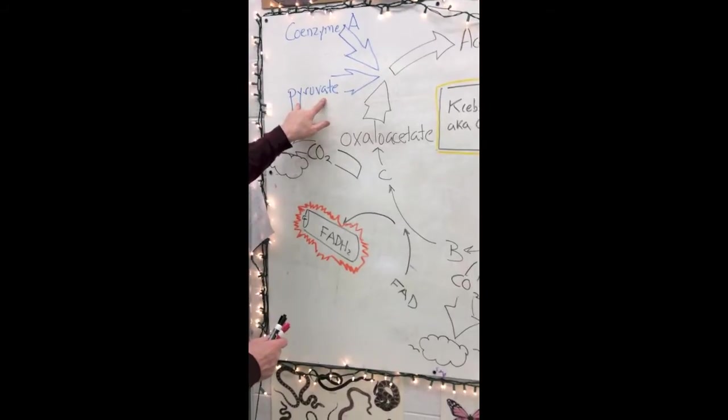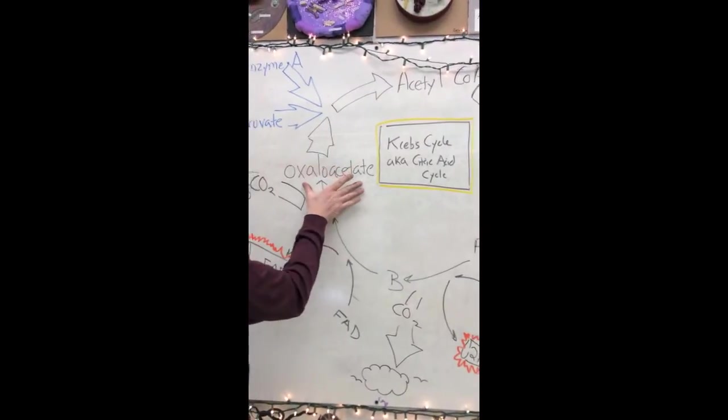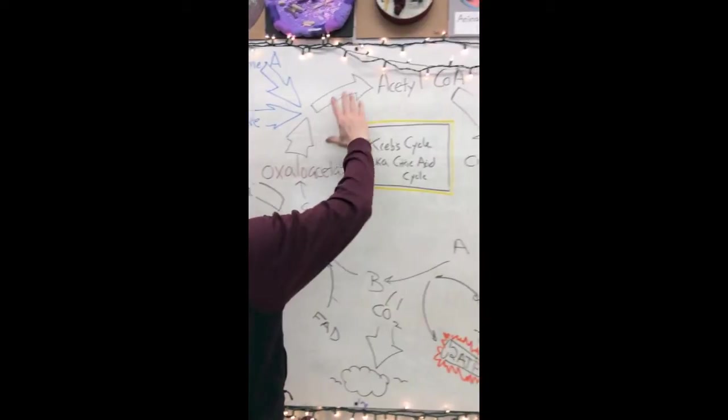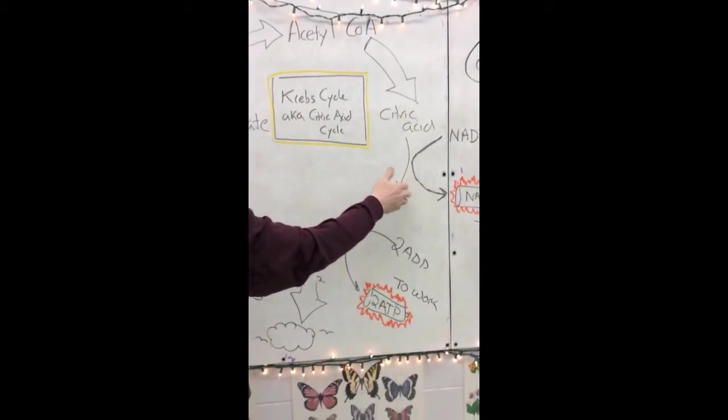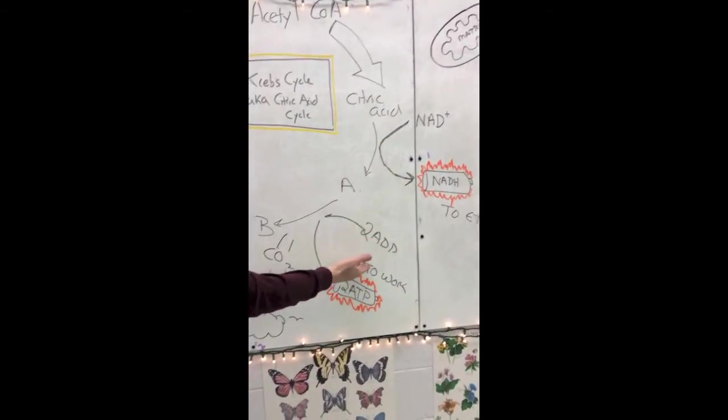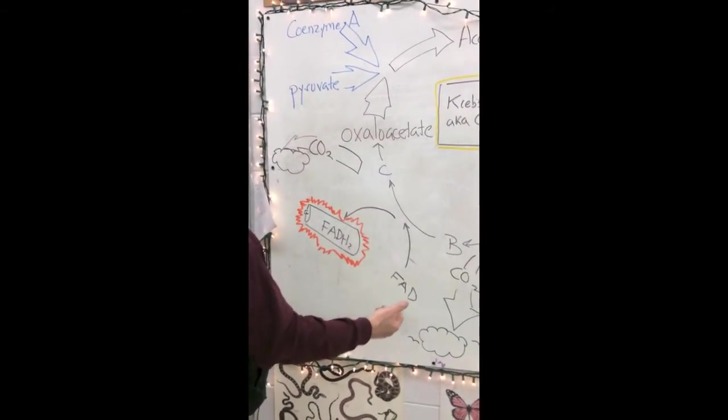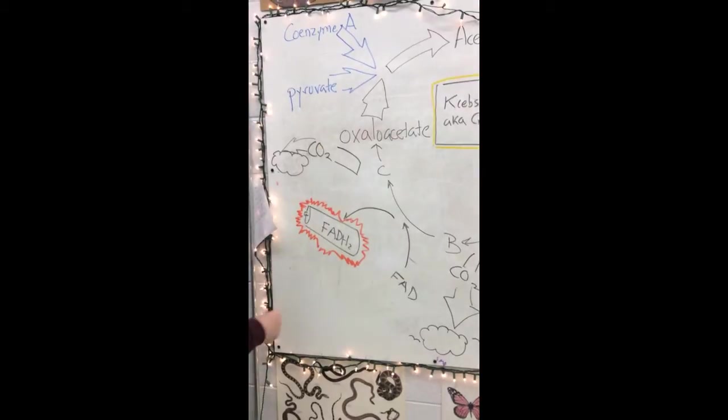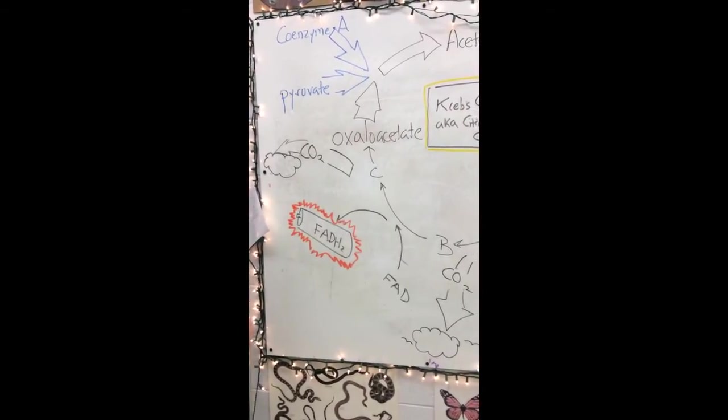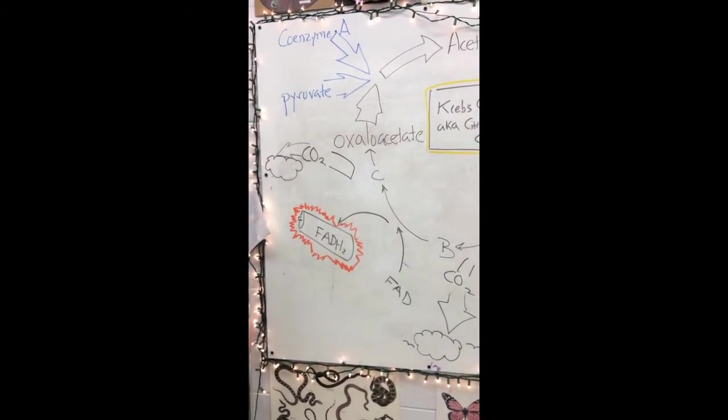So essentially we start with pyruvate, we combine it with oxaloacetate, it is carried through a metabolic pathway, charges up low energy electrons, gives off CO2 which equals the pyruvate, so we start back with oxaloacetate, our original chemical.